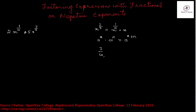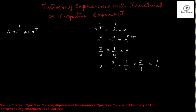So 3/4 is equal to 1/4 plus x — let's call the unknown exponent x. Then x is equal to 3/4 minus 1/4, which is 2/4, which is equal to 1/2. So I can write x raised to the power 3/4 as x raised to the power 1/4 into x raised to the power 1/2.